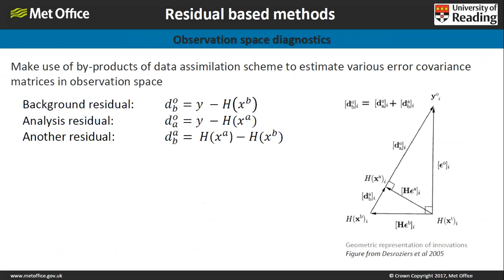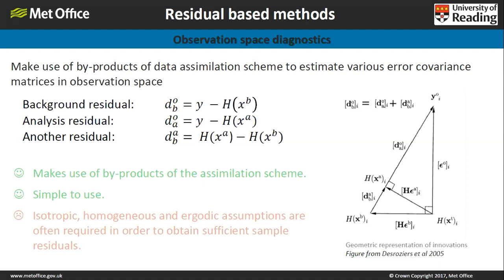Recently the most popular approach has been residual-based methods. These are great because they make use of byproducts of the data assimilation scheme — information you already have to hand. There are three residuals: the background residual (observation minus background), the analysis residual (observation minus analysis), and the analysis minus background residual, which can be summarised on a geometric representation. The pros are that they are easy to use, easy to implement, and make use of existing data. The con is that you must collect many samples over space and time, requiring an assumption that observation error statistics are not changing rapidly.